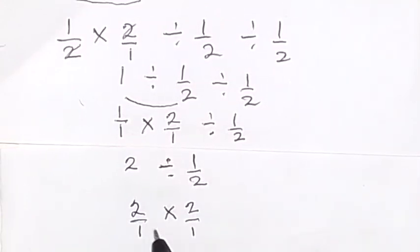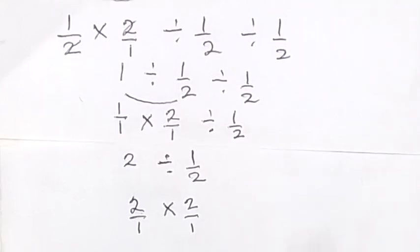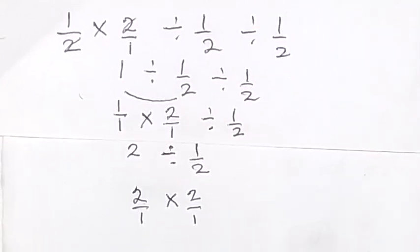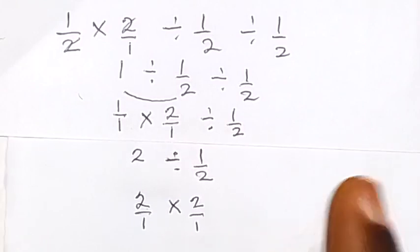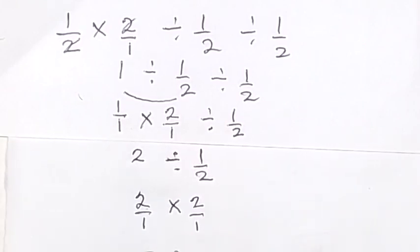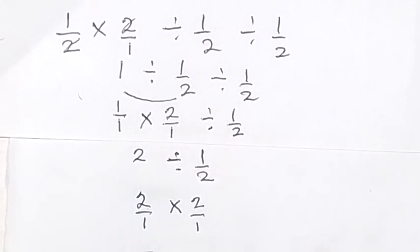So therefore, we can see that here we have 2 times 2, and that is simply 4 there. So 2 times 2, we have with us 4. So the final answer here is 4.